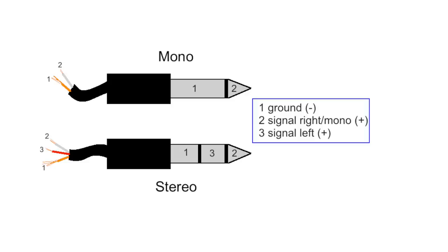We simply connect two mono jacks to one stereo jack or plug. Therefore we have to connect the ground of the stereo jack marked with number 1 to the ground of each mono jack.